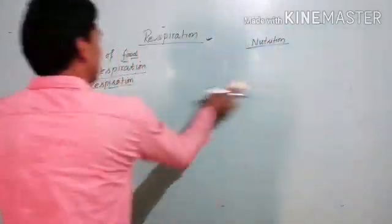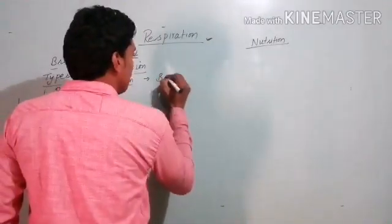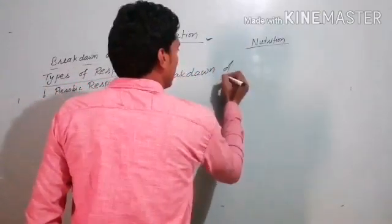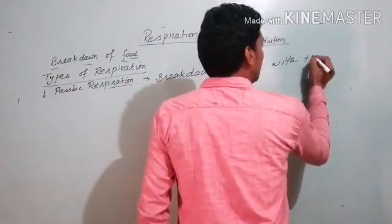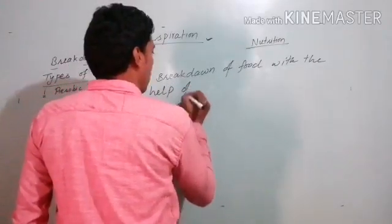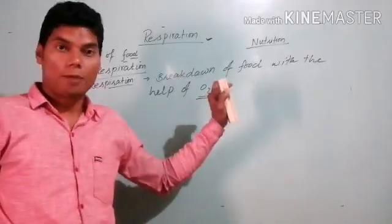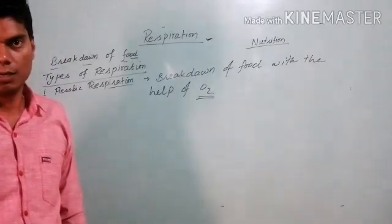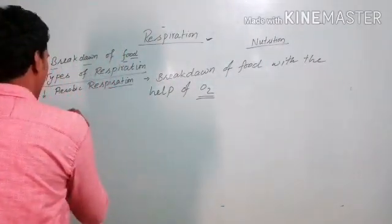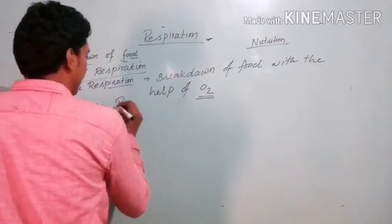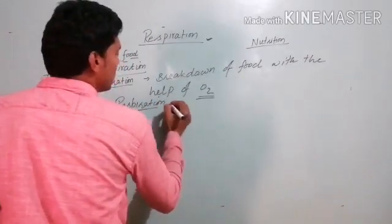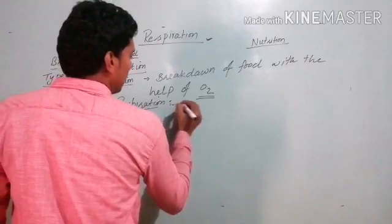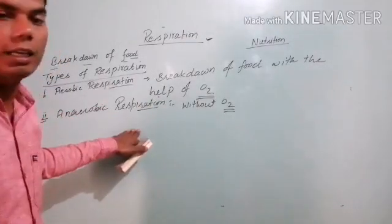The first type is aerobic respiration — the breakdown of food with the help of oxygen. Note this point: with the help of oxygen, the food is broken down. The second type is anaerobic respiration — the breakdown of food without oxygen. These are the two different types of processes which we will study in detail.